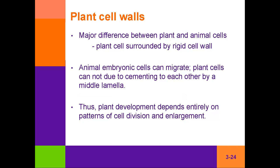A big difference between plant and animal cells — there are a great number of differences — but the main one is that a plant cell is surrounded by a cell wall composed largely of cellulose. Animal cells do not have a cell wall. Fungi also have a cell wall, though it's not composed of cellulose. No animal cells are surrounded by a cell wall.